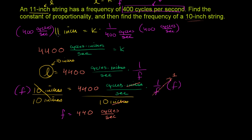From when it was 11 inches — slightly longer — our frequency was 400 cycles per second. When our string got a little bit shorter, 1 inch shorter, our frequency increased by 40 cycles per second.